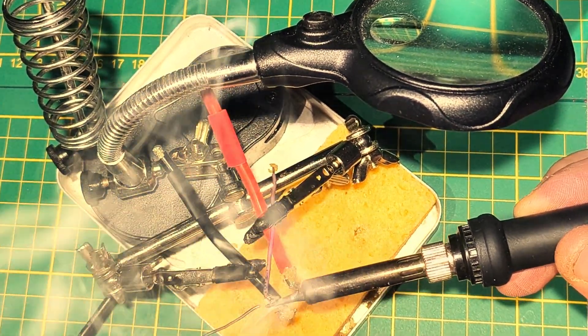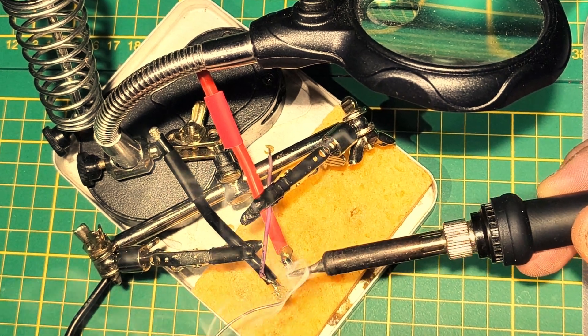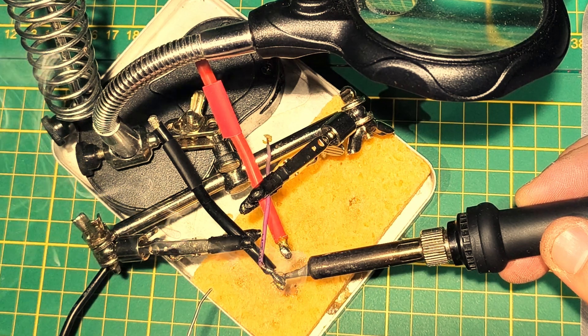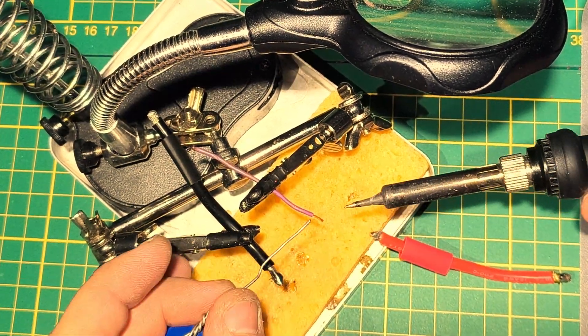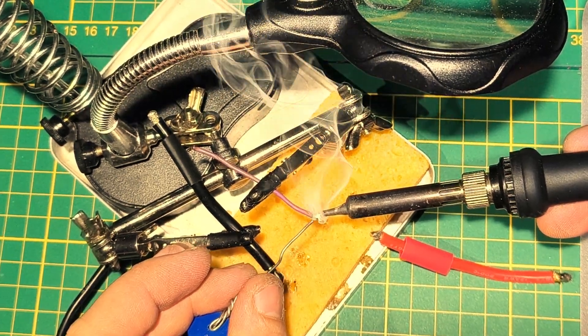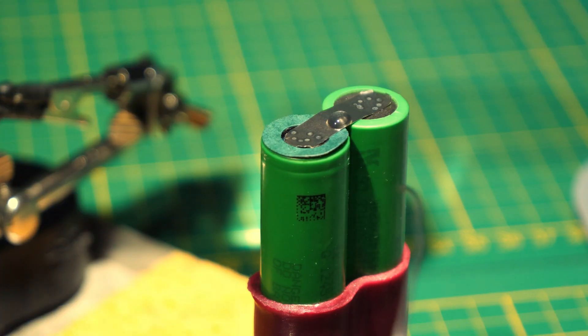I solder wires to the balancer plug in such way that the red one goes to the positive terminal, the black one to the negative terminal, and the middle one, in my case blue slash violet, goes to the fixed connection of the cells where we started.